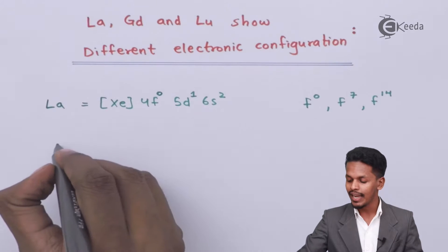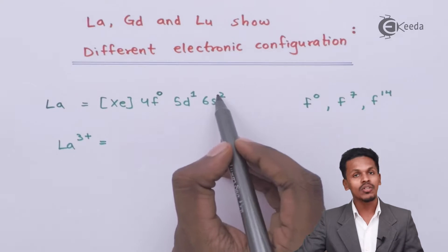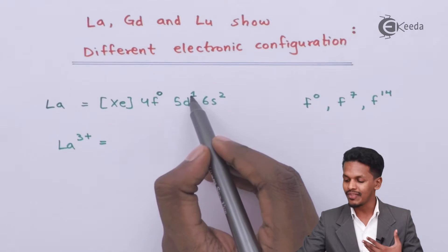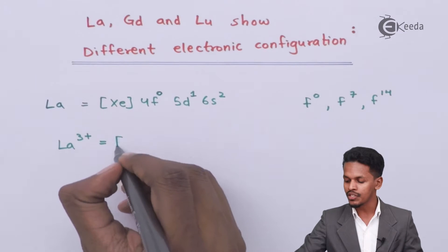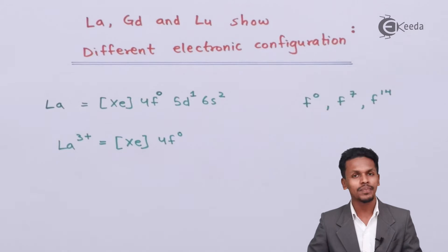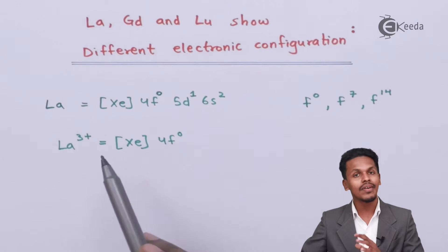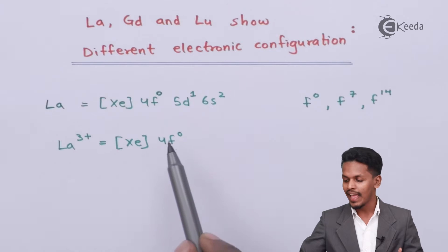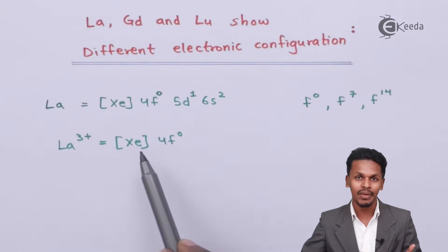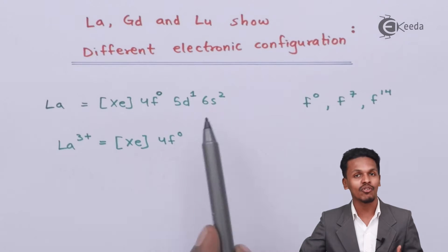If we consider the La³⁺ ion, the two electrons are eliminated from the 6s orbital and one electron is eliminated from the 5d orbital, making the electronic configuration [Xe] 4f⁰ — which is simply the xenon configuration. Therefore La³⁺ ions have a very stable electronic configuration equivalent to that of xenon, which is a noble element. On that basis it has been confirmed that lanthanum has this electronic configuration.